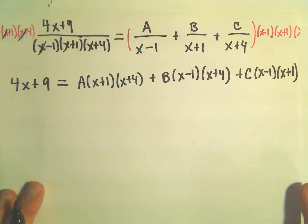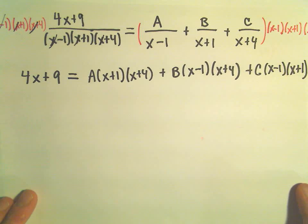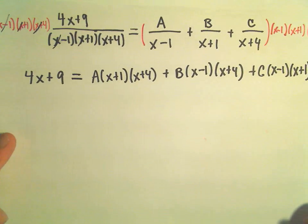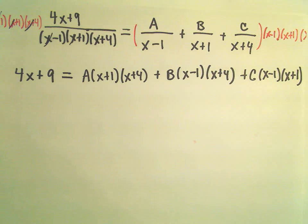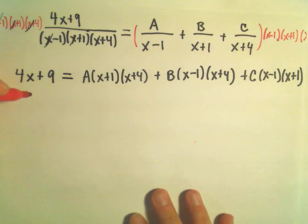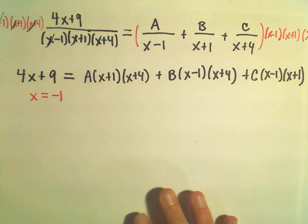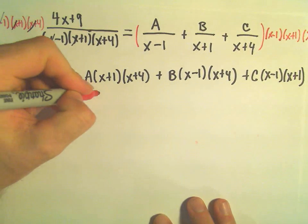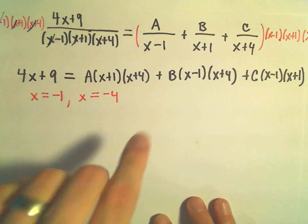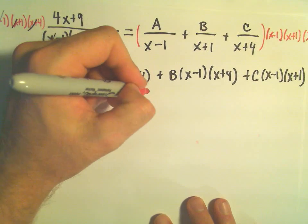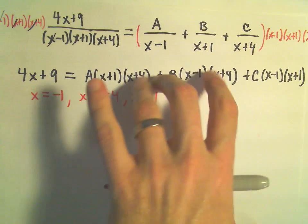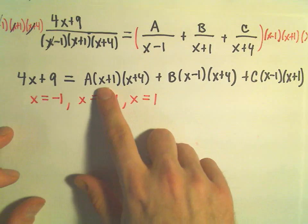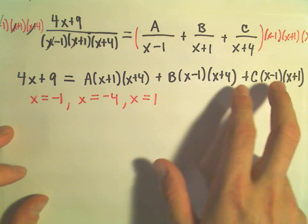Now we can do this process of equating coefficients, but I recognize that all these terms are linear, so I'm going to use a shortcut like I did in my other example. I'm going to plug in clever values of x that simplify things. If we use x equals negative 1, that gets rid of a couple terms. If we use x equals negative 4, that helps eliminate others. And x equals positive 1 will clear the remaining terms — basically, what makes each factor zero.